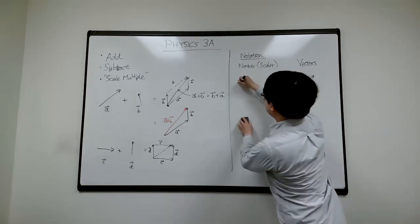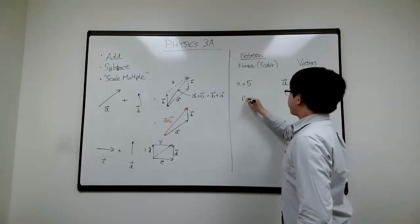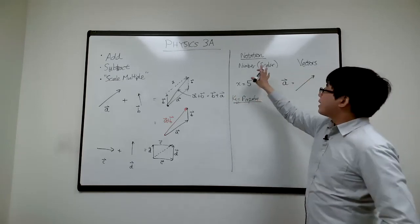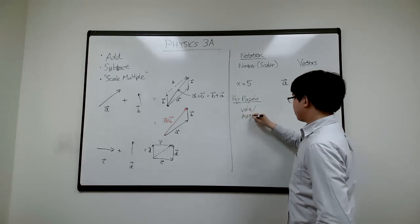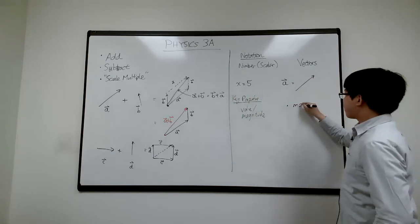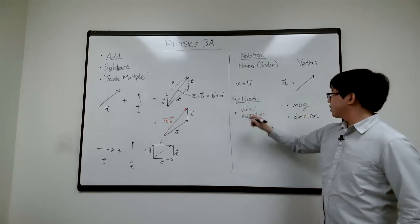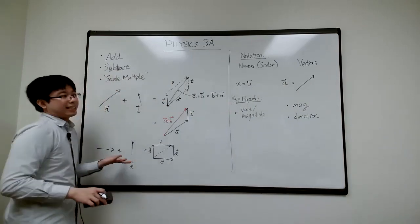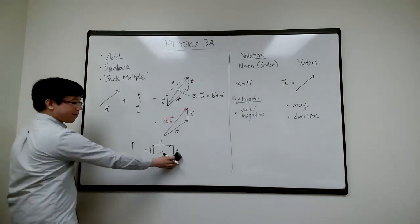The key property is that a number, or scalar, only has a value — a magnitude, how large it is. A vector has both a magnitude and a direction. You may have heard 'a vector is something that has magnitude and direction' — that's certainly correct, but more fundamentally it's an arrow.